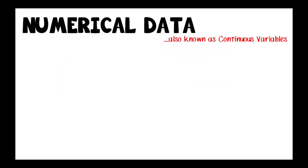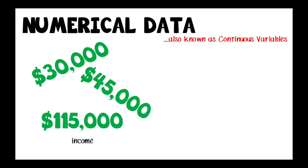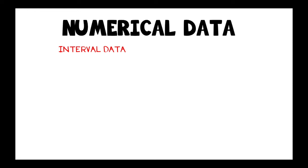Numerical data, or continuous variables, describes quantitative attributes. Numerical data includes information such as income and heights and can be split into interval and ratio.